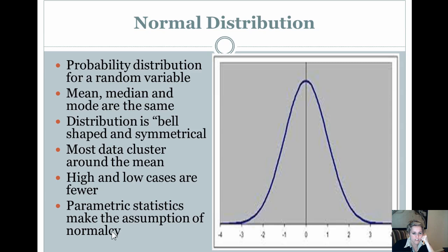And high and lower cases are fewer, which means when you think about anything around here would be a high case or a low case. And so what is called parametric statistics make the assumption of normalcy. So I'm not going to go into non-parametric statistics for the purpose of this. But if you were ever to think about your data, you could do a box and whisker plot to evaluate whether it falls under normalcy, or you could do a very quick check of how skewed your data is to see if it's normal. And if it's not normal, you would use a non-parametric statistic.